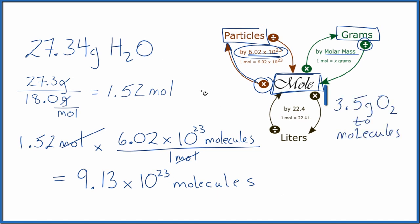So pause and give this one a try. 3.5 grams of oxygen, convert that to molecules. You should have gotten 6.6 times 10 to the 22nd molecules of O2. If you need help with that, there's a link at the end of this video to this exact problem.